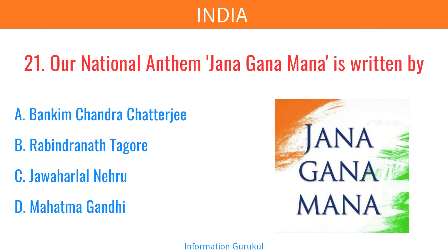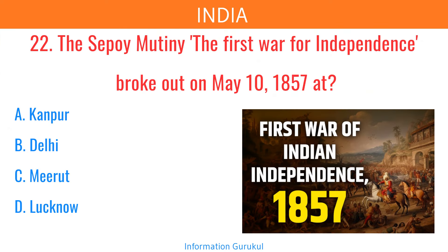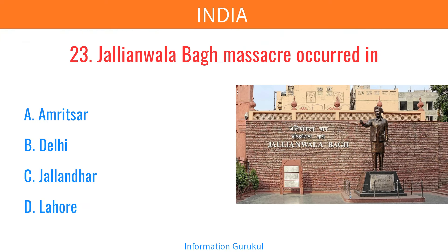Our national anthem, Jana Gana Mana, is written by Rabindranath Tagore. The Sepoy Mutiny, the first war for independence, broke out on 10th May 1857 at Meerut. Jallianwala Bagh massacre occurred in Amritsar.